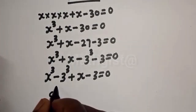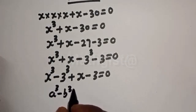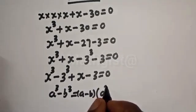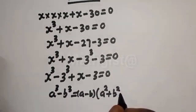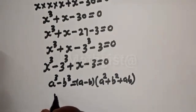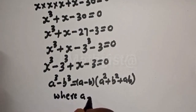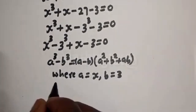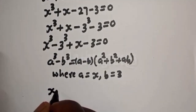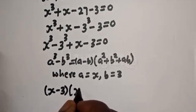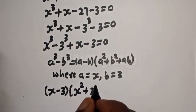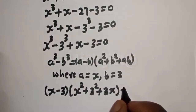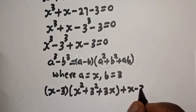The rule is: if you have a³ − b³, this equals (a − b)(a² + b² + ab), where a is equal to s and b is equal to 3. So applying this, we get (s − 3)(s² + 3² + 3s) = 0.